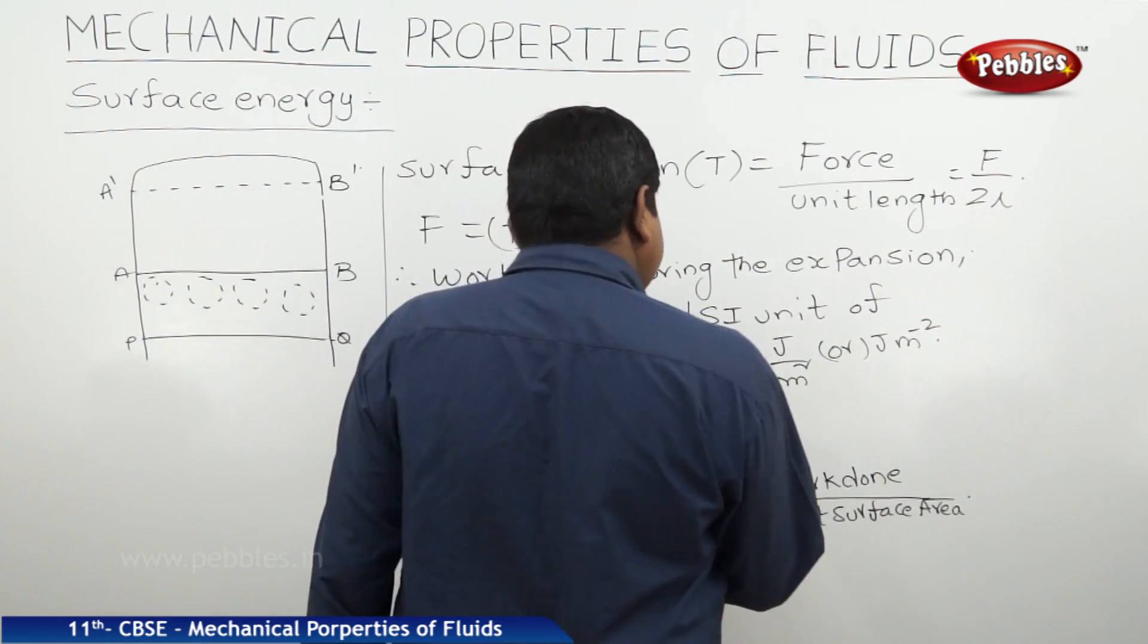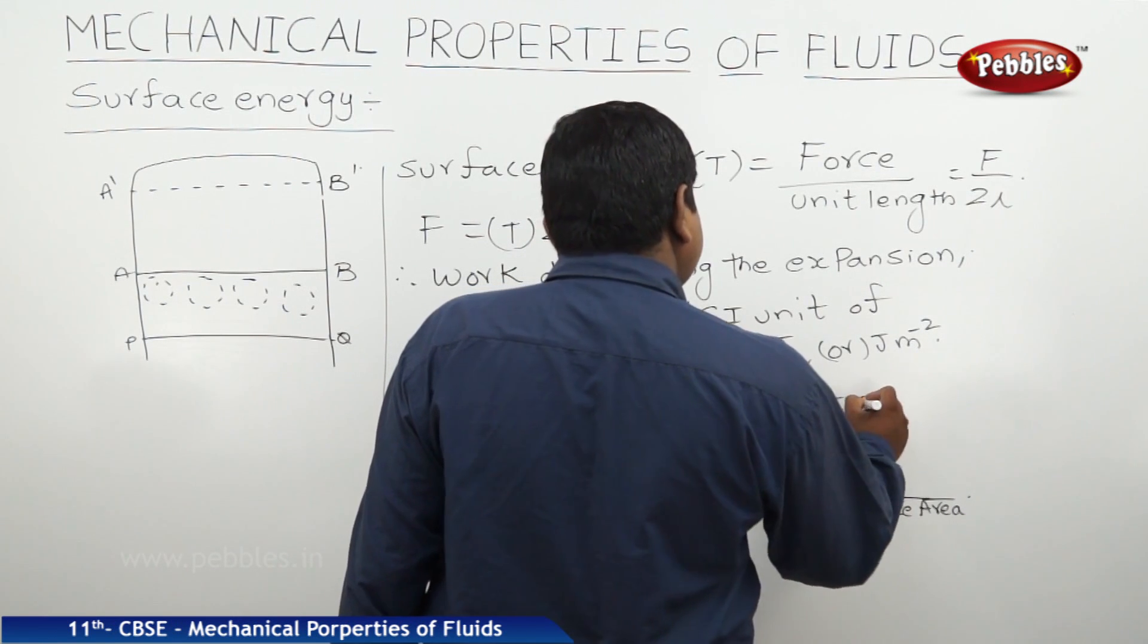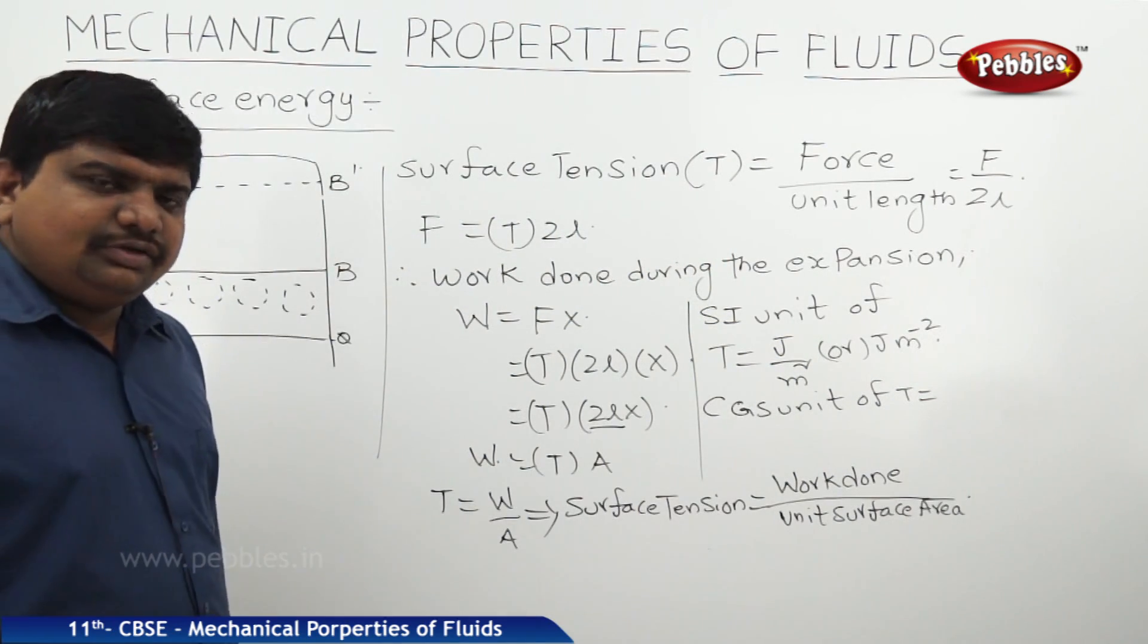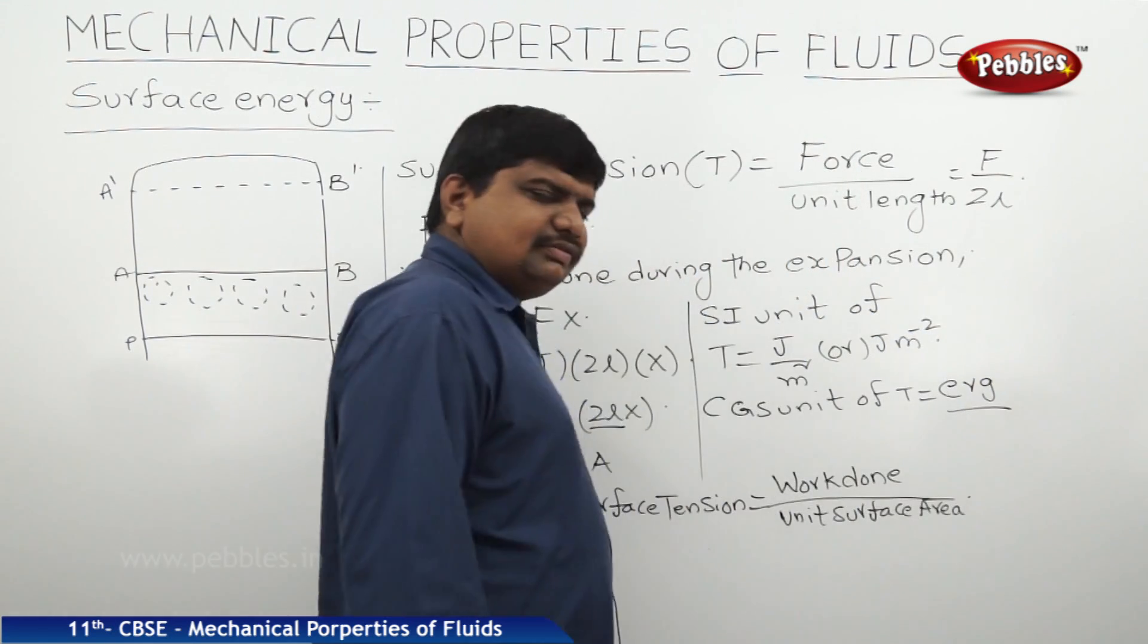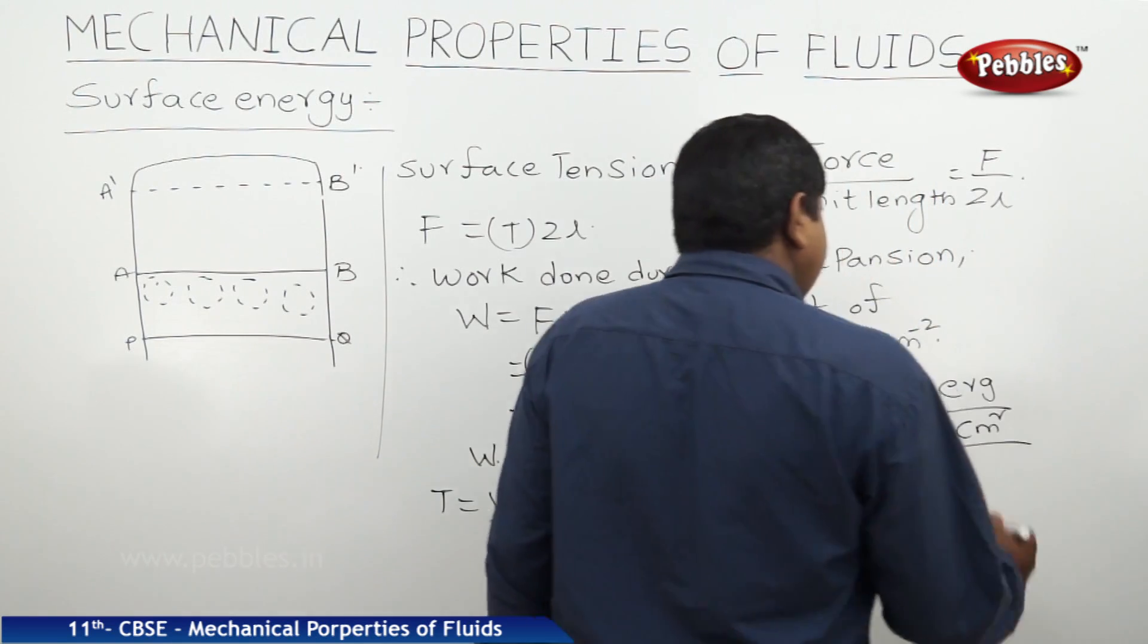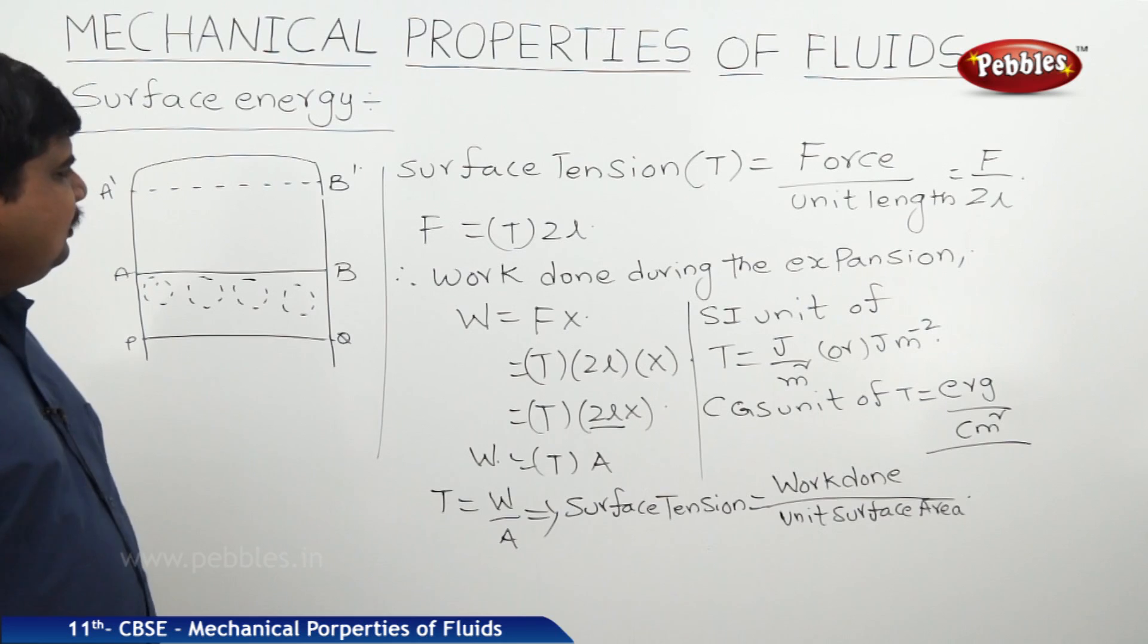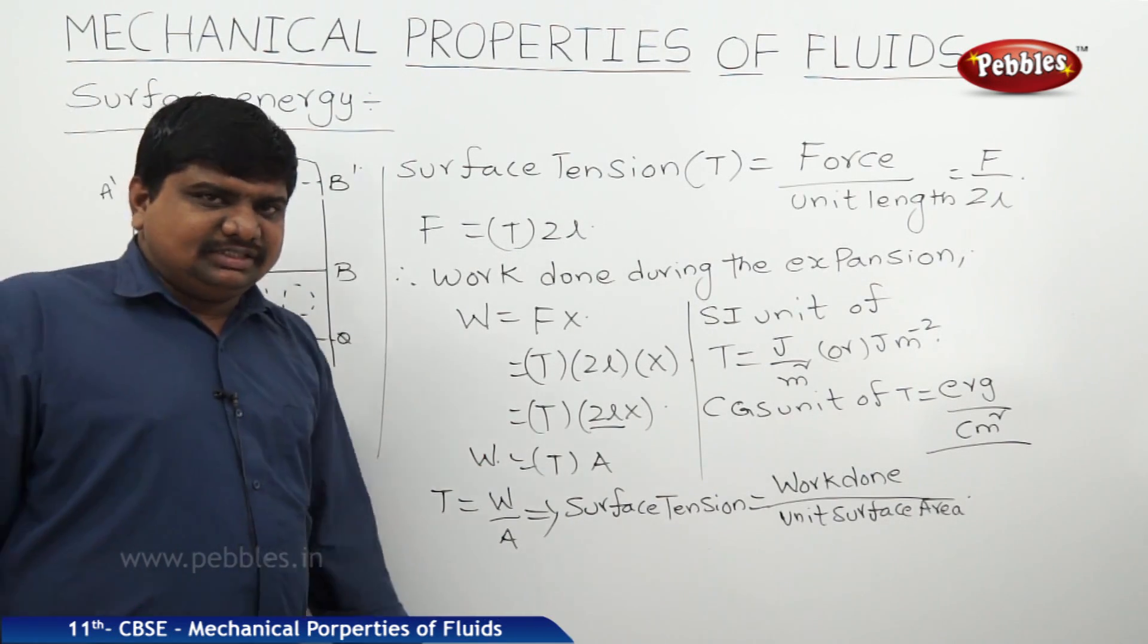In CGS unit, the CGS unit of T is equal to, the CGS unit of work done is erg and CGS unit of surface area is centimeter square. This is erg per centimeter square. Like this, we can find out another definition of surface tension from the concept of surface energy.